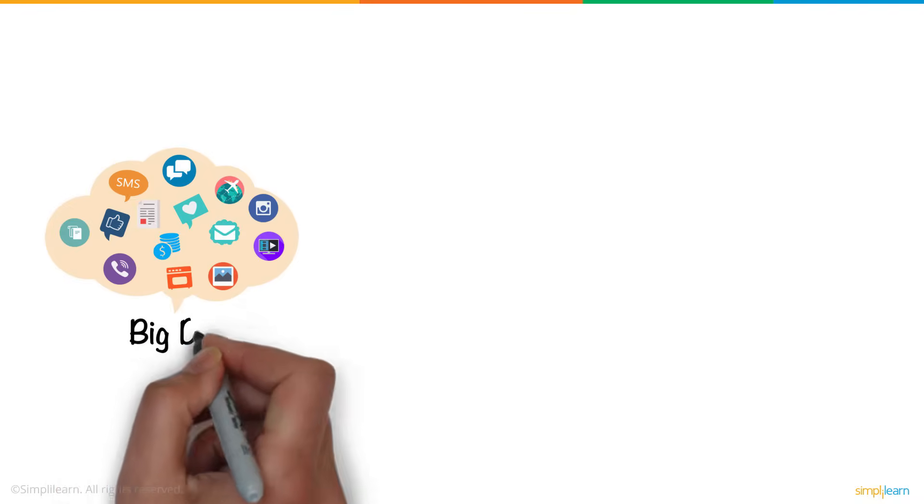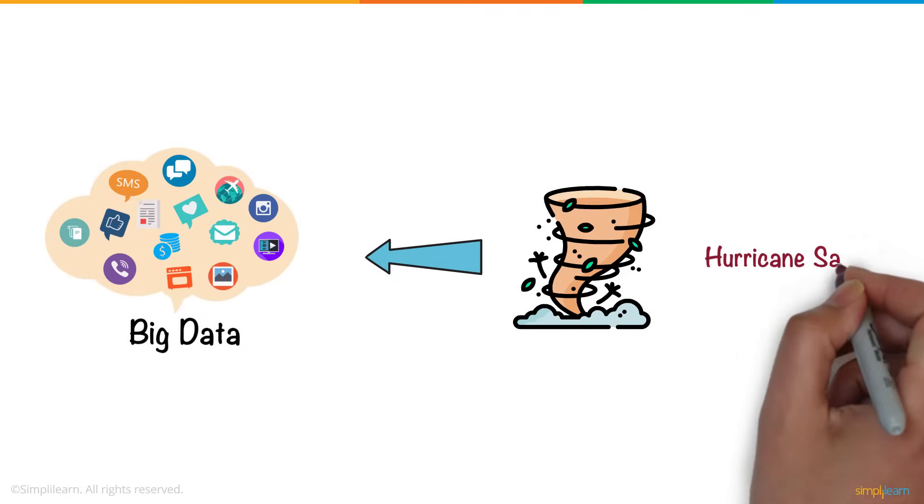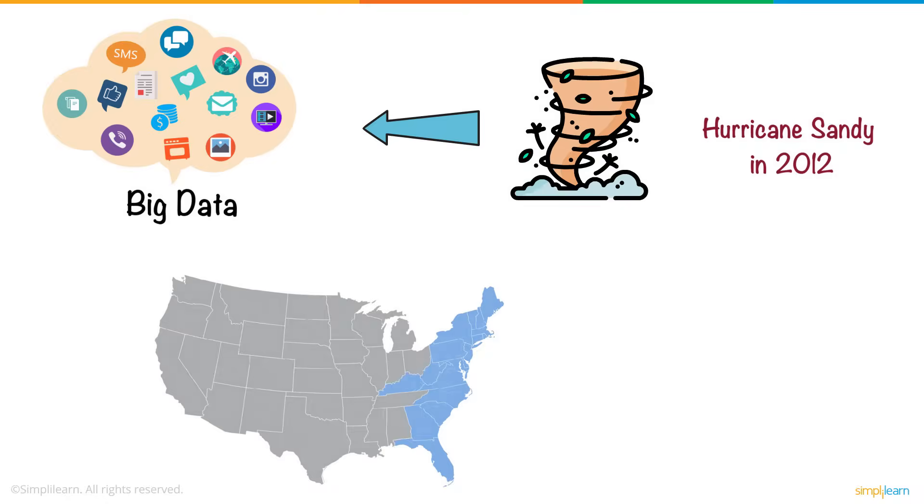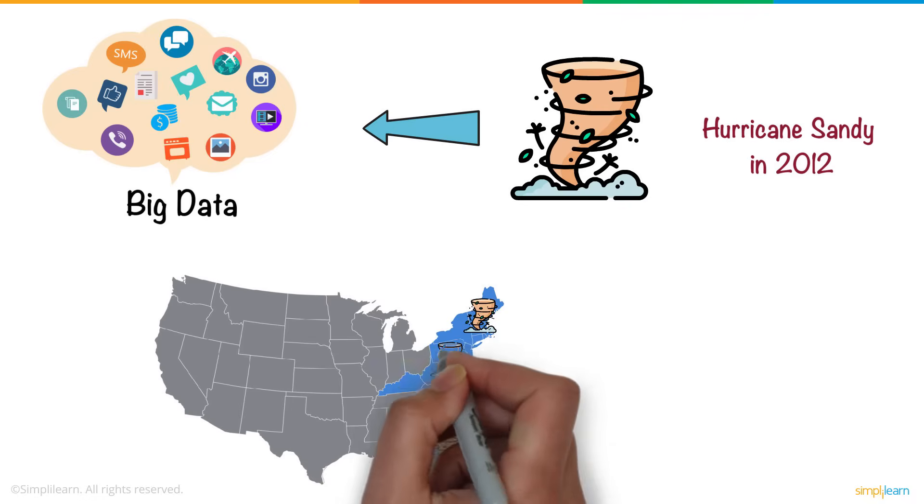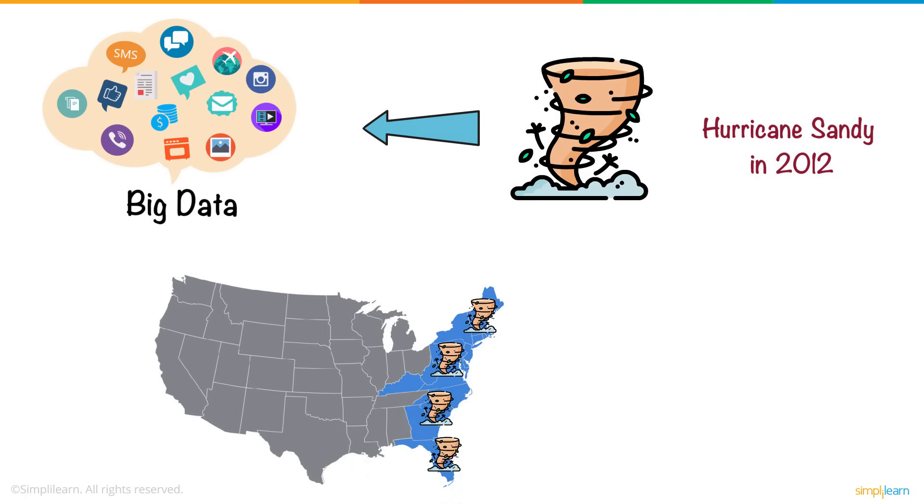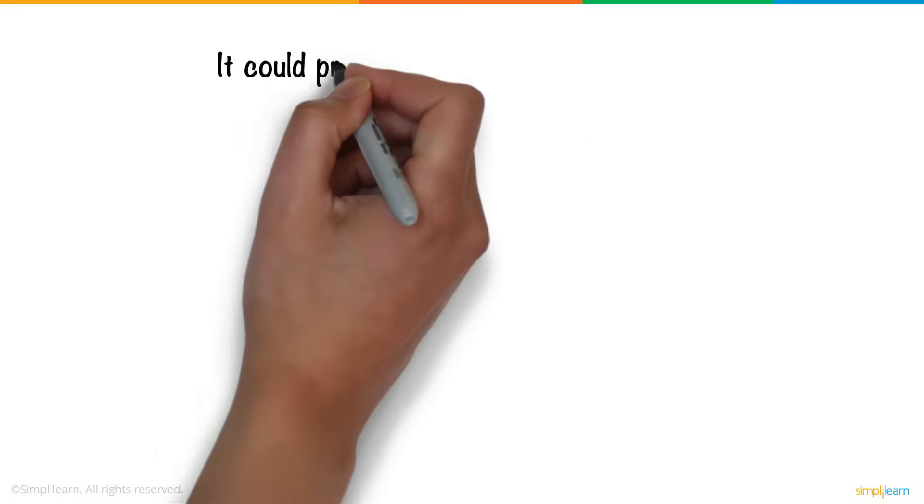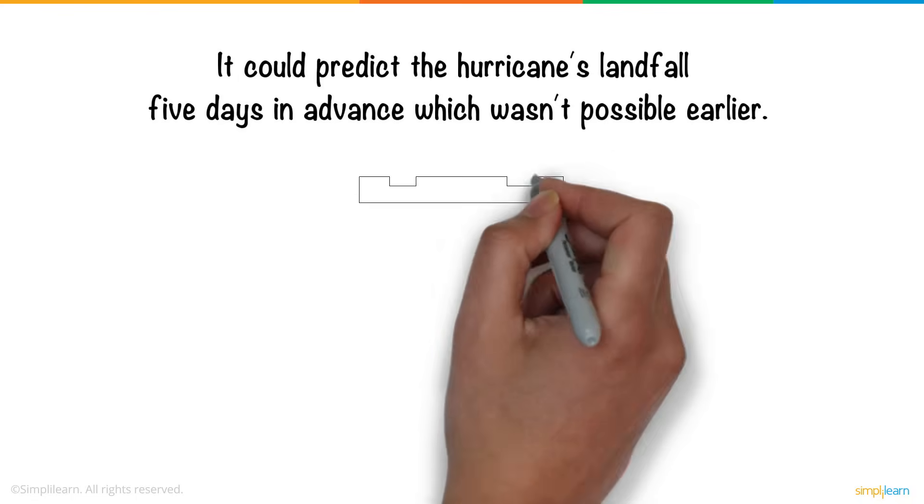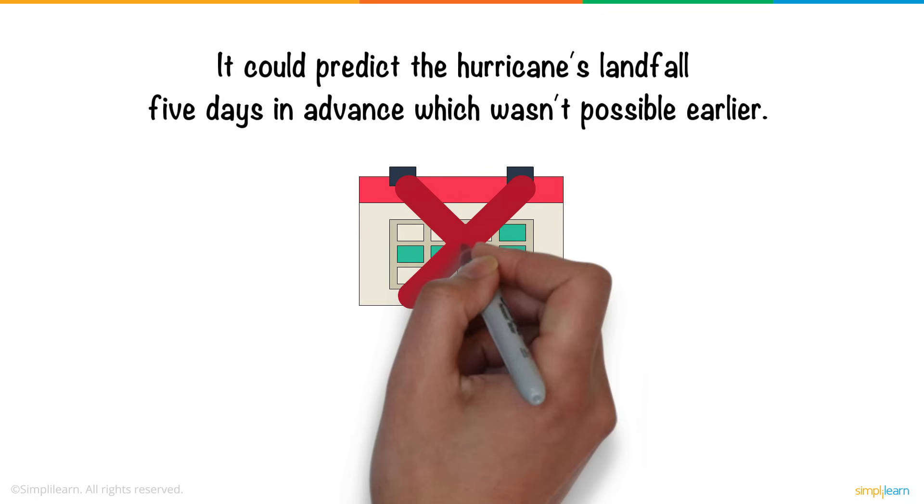Similarly, big data also helped with disaster management during Hurricane Sandy in 2012. It was used to gain a better understanding of the storm's effect on the east coast of the U.S., and necessary measures were taken. It could predict the hurricane's landfall five days in advance, which wasn't possible earlier.